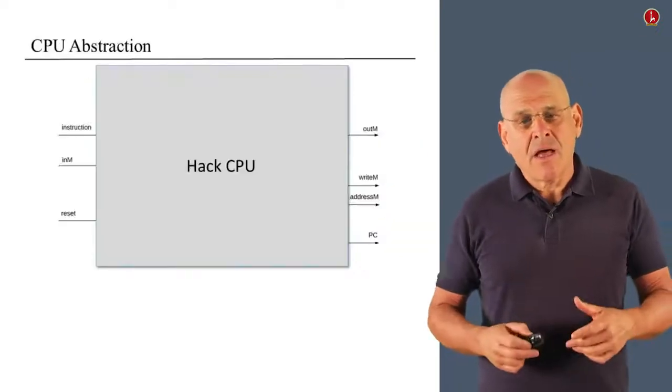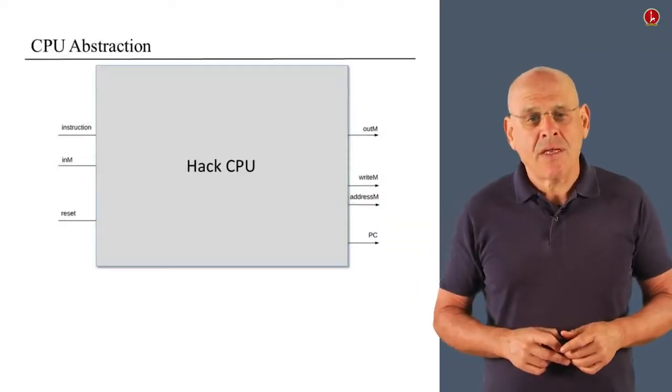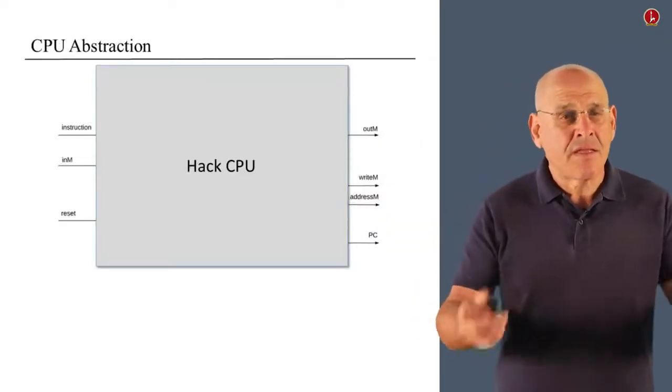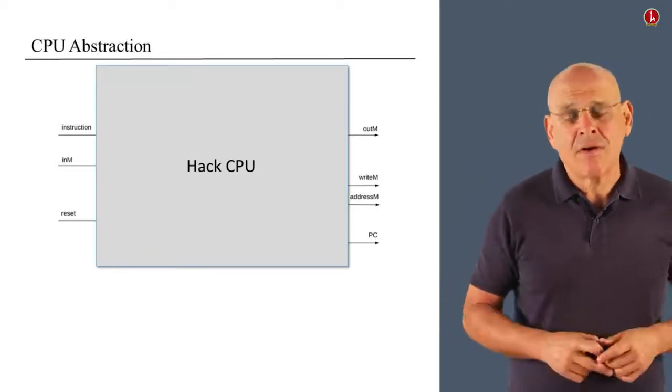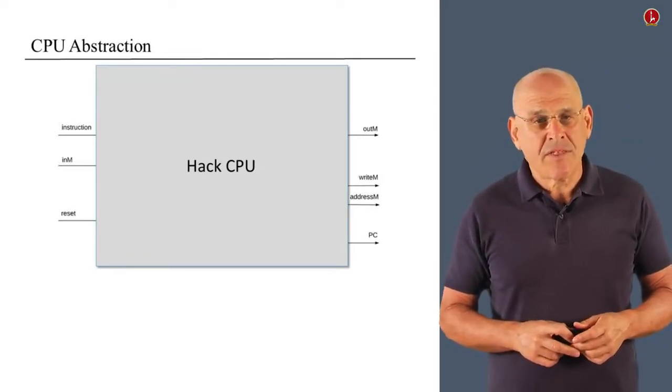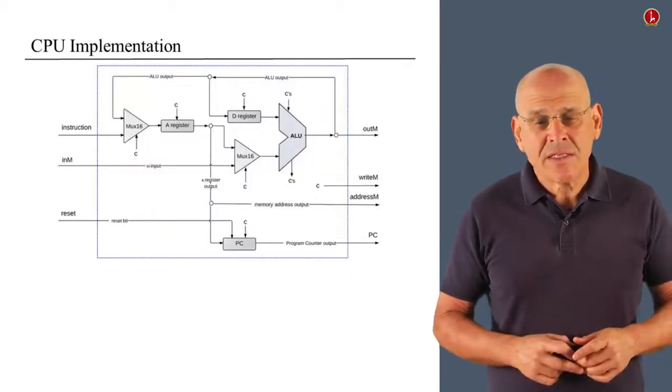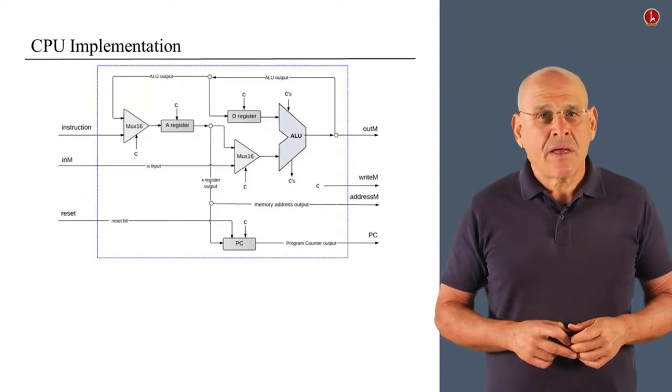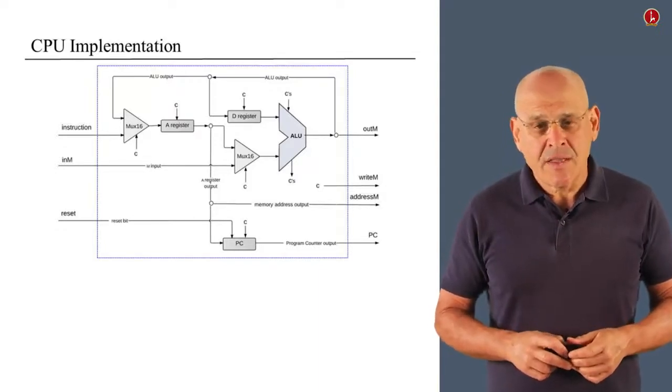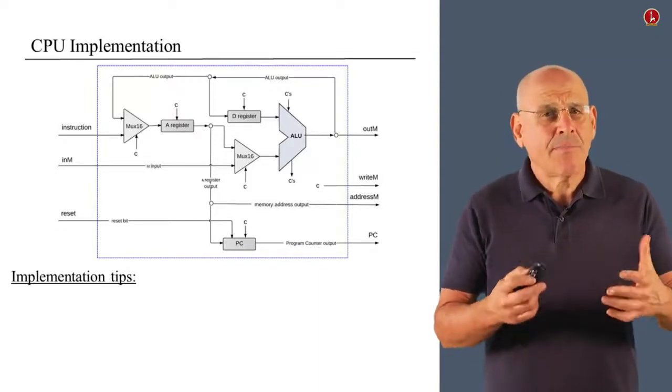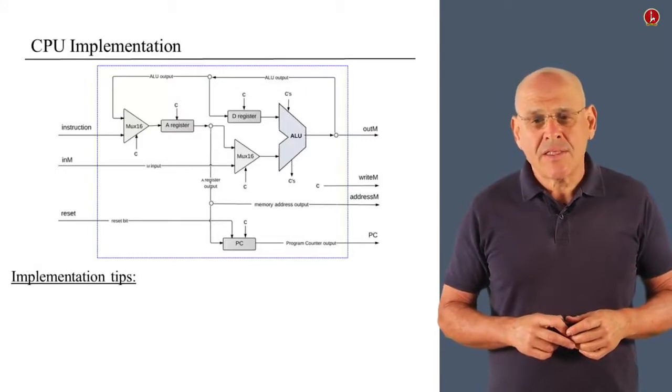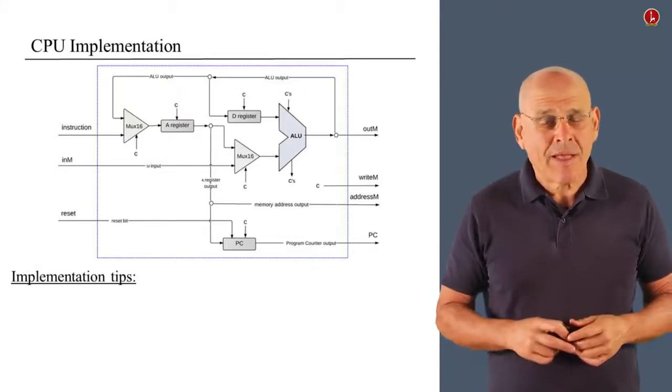So let us begin with the CPU. Once again, here is the CPU in abstract terms. We see here the API or the input and output units of the CPU. And if we delve into the implementation, we get this diagram that we discussed earlier in the course.